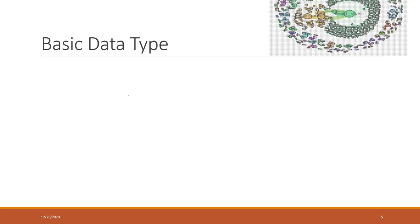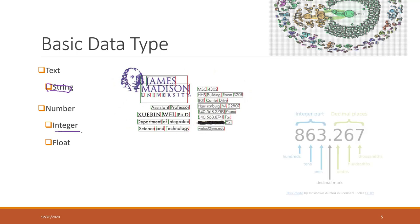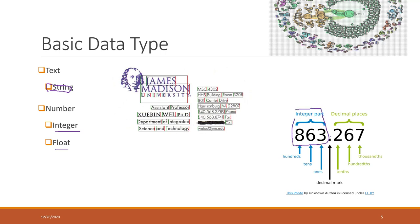So the basic data types: we have strings — just words like we speak; and we have numbers, which have two sub-types. Integer means the number contains only an integer part with no decimal values. Float means we do have the decimal part with values behind the decimal point.